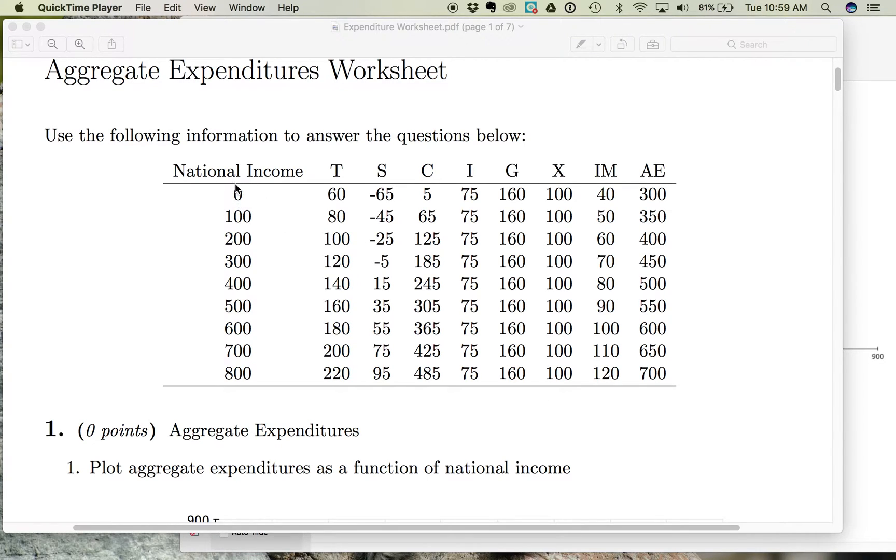So notice that when national income is zero, savings is negative. In this example, it's a negative 65. This is what is called dis-savings. So notice when our income is zero, we are pulling money out of our savings account.